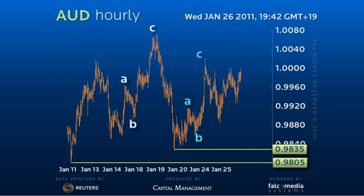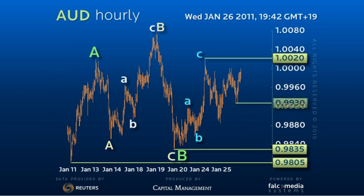While this attempt at the 10020 peak is likely to fail and provide the appearance of more 10020 to 9930 consolidation, there is the chance that the rally is taking shape as a more complex C wave diagonal wedge.